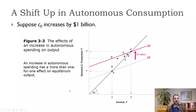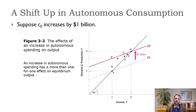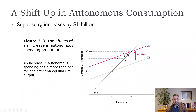Now we can think about what happens when autonomous consumption, investment spending, or government spending increases. We start at point A and the demand curve shifts up to point B. That means we have higher demand, so to reach our new equilibrium we need to increase production. Income goes up, which means production goes up, and then income goes up a little more, so consumption goes up a little more, and we move to point D, then point E.